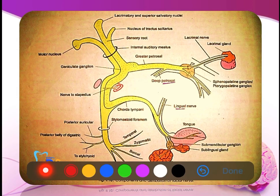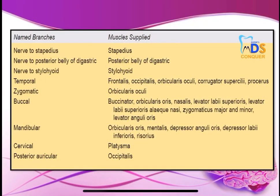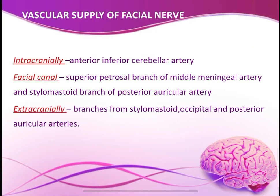The diagram from Chaurasia for the facial nerve is essential — you must draw it. Draw the three nuclei: lacrimatory and superior salivatory nucleus, nucleus tractus solitarius, and the motor nucleus. Show how via the greater petrosal nerve it innervates the lacrimal gland and pterygopalatine ganglion; via chorda tympani it innervates the tongue; and the motor nucleus gives motor fibers to the five terminal branches. After drawing this diagram, draw a box showing which nerves supply which specific muscles.